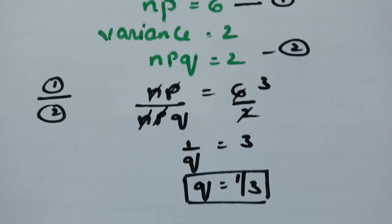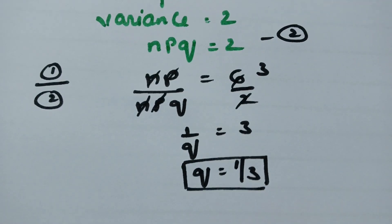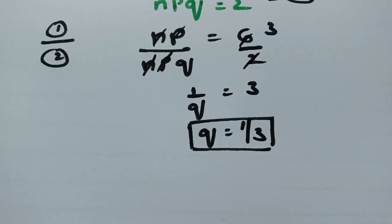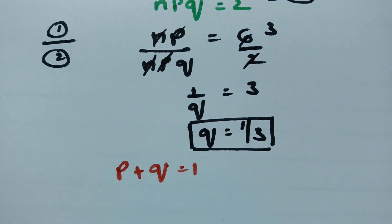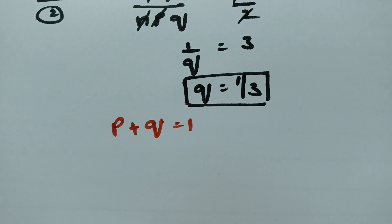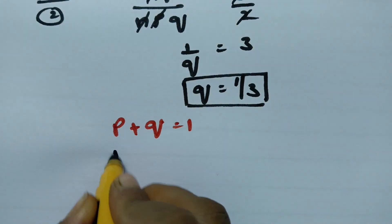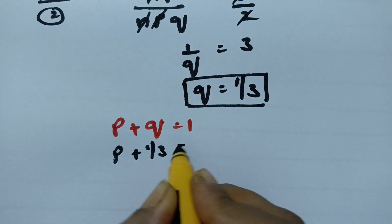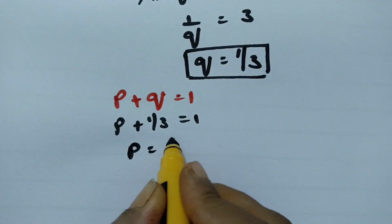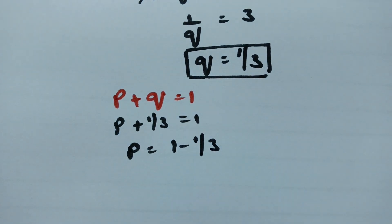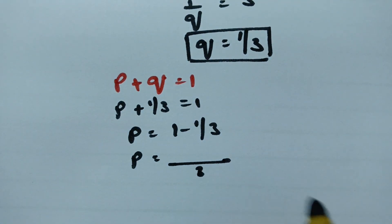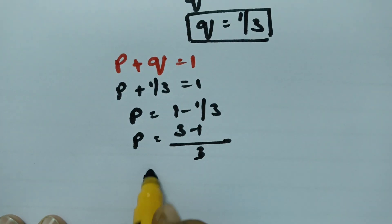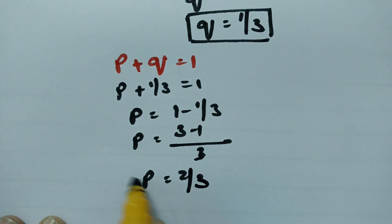After getting Q, as we know the total probability is always equal to 1, that is P + Q = 1. Substituting Q = 1/3: P + 1/3 = 1, so P = 1 - 1/3. Taking 3 as LCM, P = (3-1)/3, so P = 2/3.